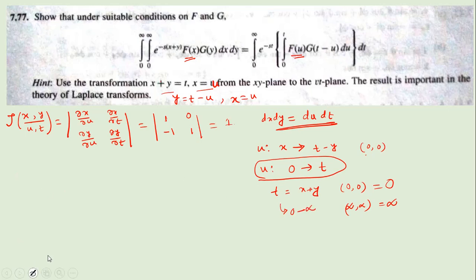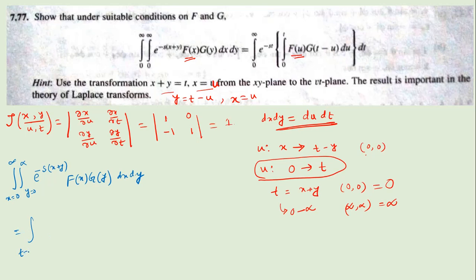Now put this into the original integration: x from 0 to infinity, y from 0 to infinity of e to the power minus s(x+y) times f(x) times g(y) dx dy. Substituting: t from 0 to infinity, u from 0 to t, with e to the power minus st, f(u), g(t minus u), du dt. Since e to the minus st is independent of u, you can factor it out to get the final expression.